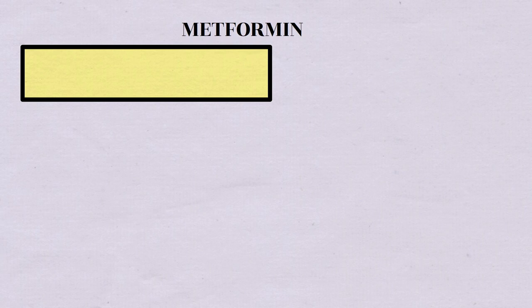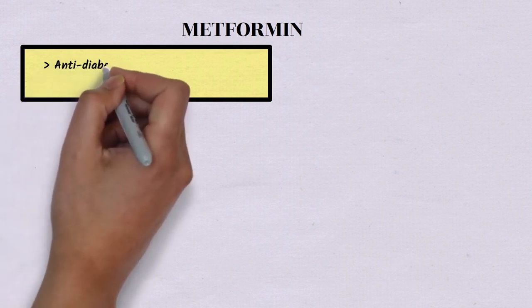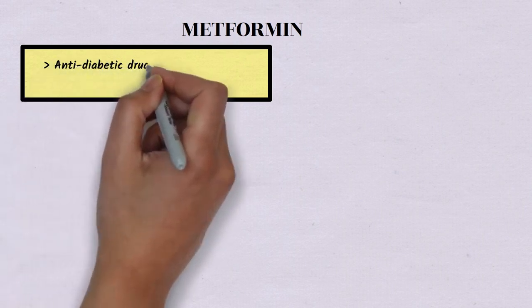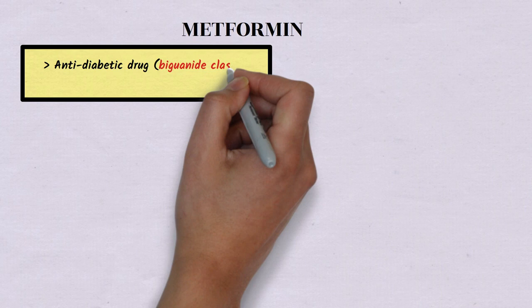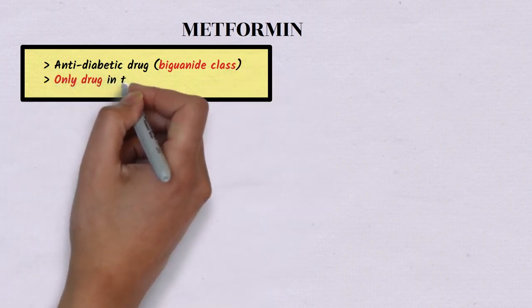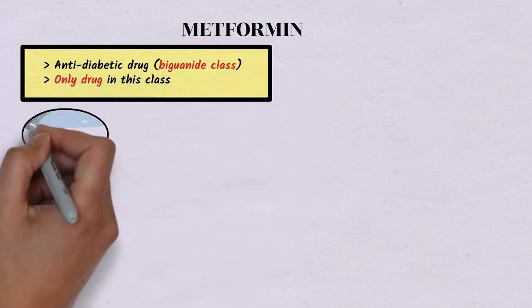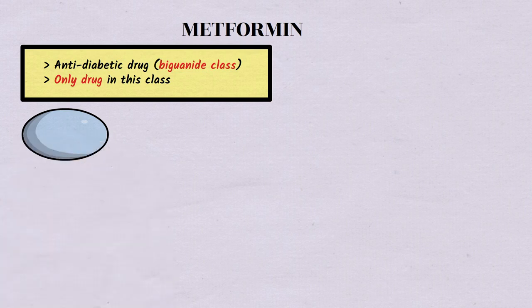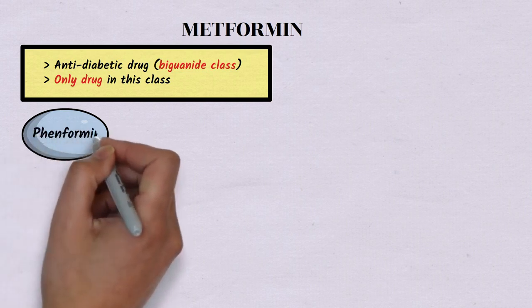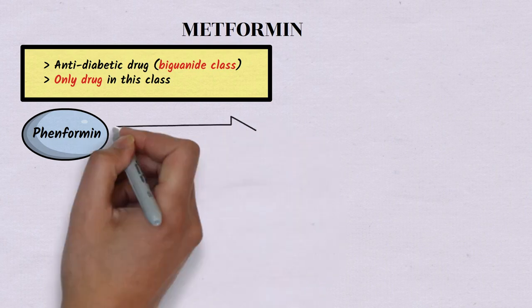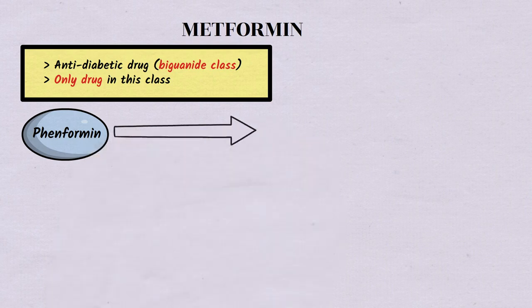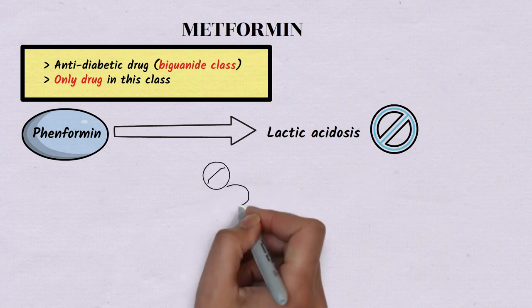In this video, we will discuss about metformin. Metformin is an anti-diabetic drug belonging to the biguanide class. You should remember that metformin is the only drug available in this class. One more drug was available previously called phenformin; however, it was discontinued because of its strong association with lactic acidosis.